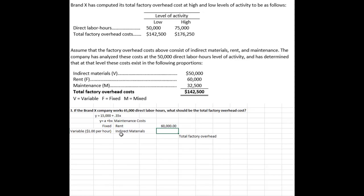The indirect materials are variable, and we've determined that to be $1 per direct labor hour because of this linear, one-to-one relationship. So if we work 65,000 hours, I would expect $1 per hour — $65,000.